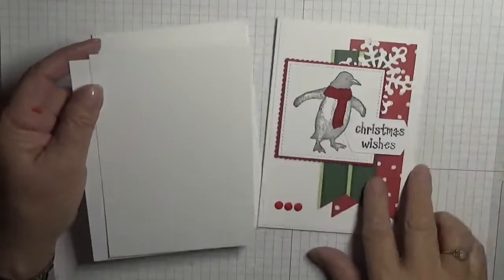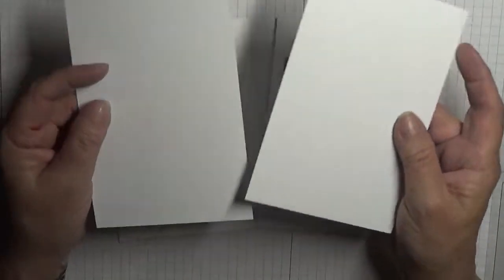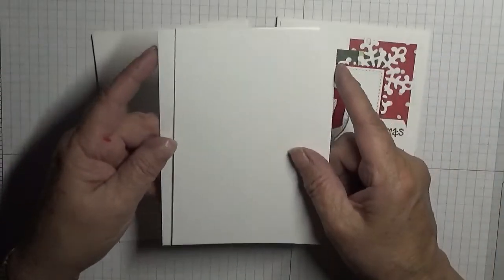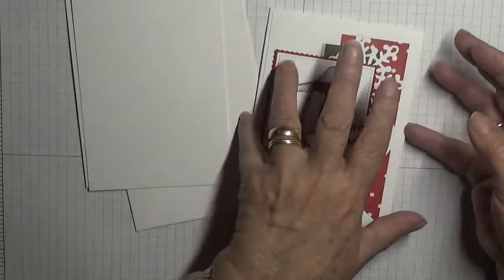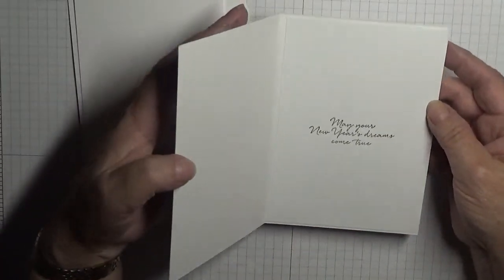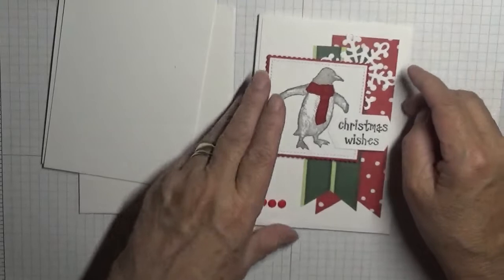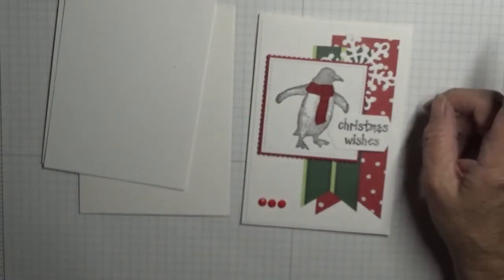Two pieces of white cardstock, five and five eighths by three and seven eighths. Did I do anything inside? Yeah. May your New Year dreams come true. So I need to get that out.